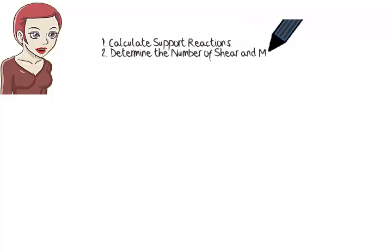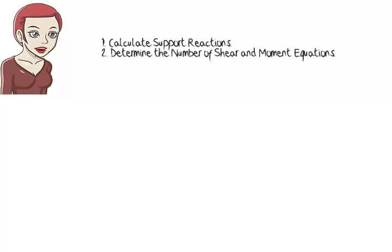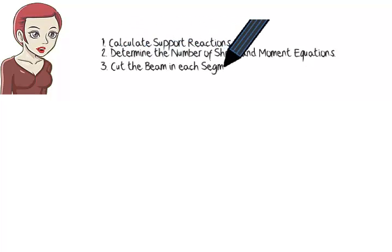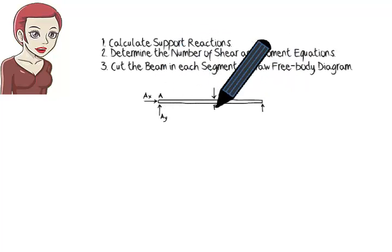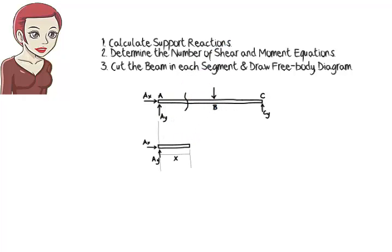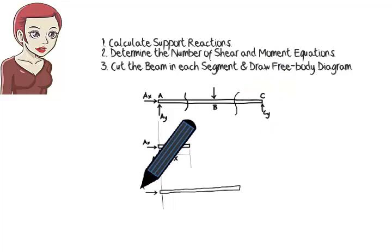Let's summarize what we have so far. To write shear and moment equations, first we calculate the beam's support reactions. Second, we determine the segments that the beam needs to be divided into for the purpose of formulating shear and moment equations. In the third step, we are going to cut the beam in each of the identified segments at some distance, say x, from the left end of the beam. For example, if this is our beam, we are going to cut it twice: once in segment AB, and once in segment BC.